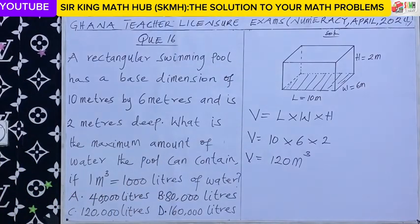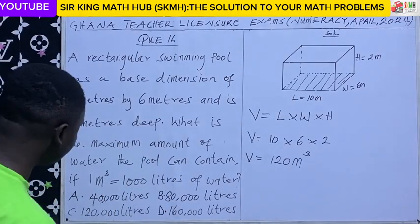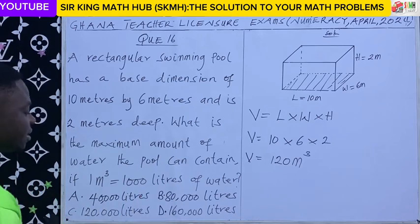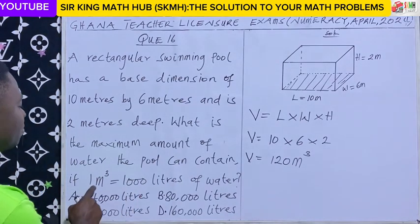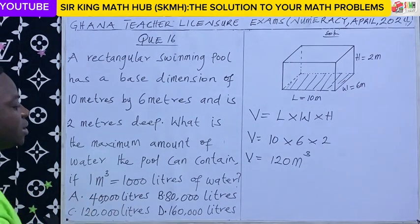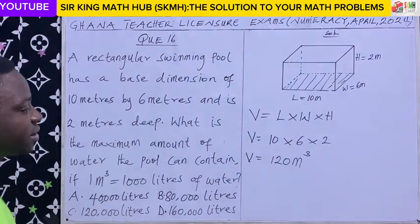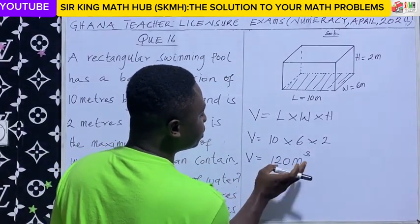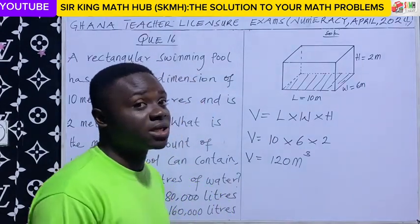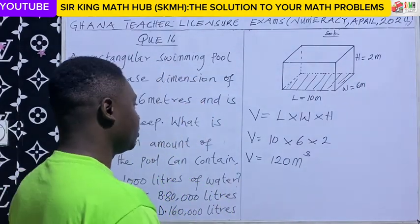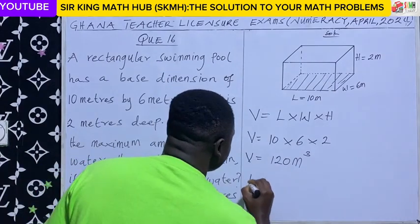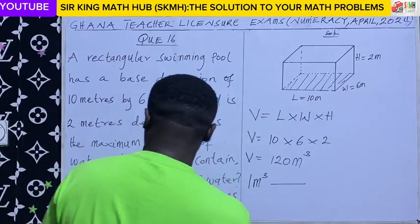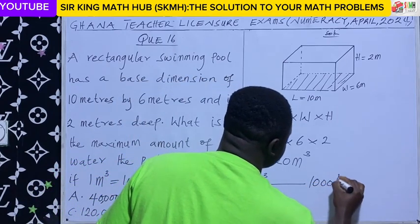But now they want us to find the water this pool can contain in liters, given that 1 meter cubed is equivalent to 1000 liters. We have calculated the volume, that is 120 meters cubed. So let's convert 120 meters cubed to liters. We know that every 1 meter cubed is equivalent to 1000 liters.